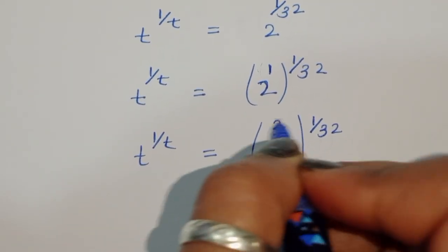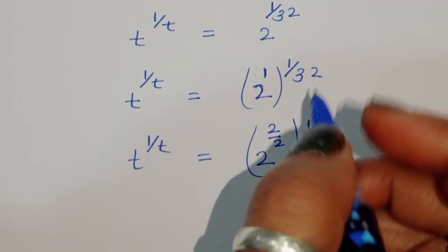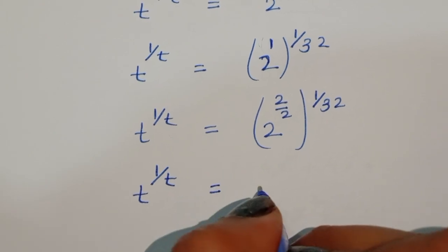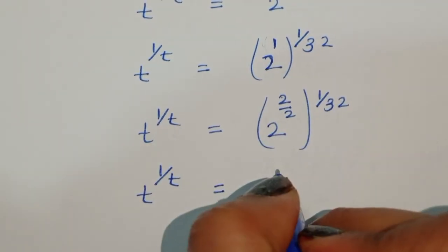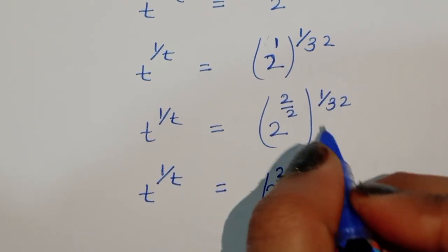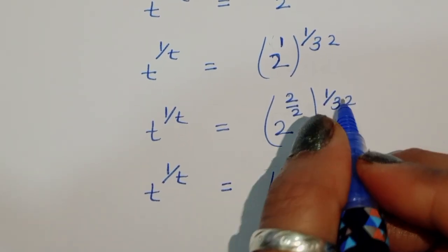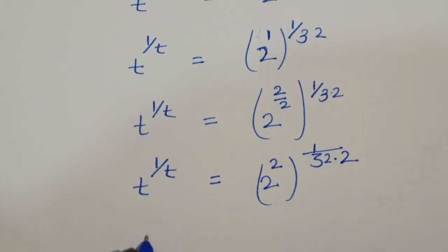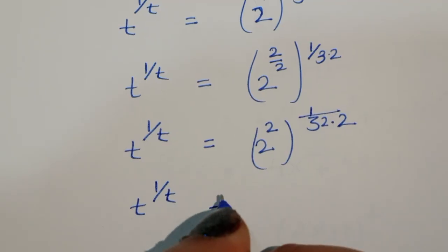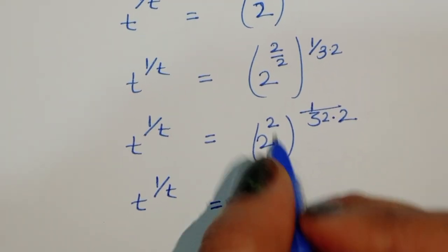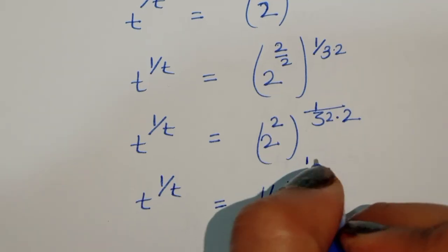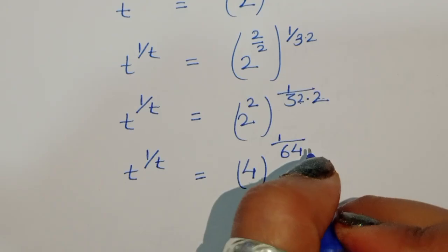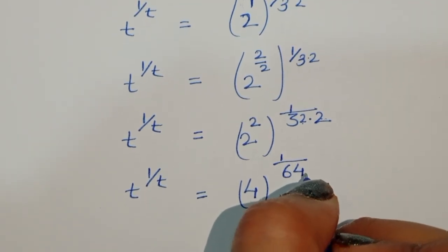Now 2 upon 2 is 1, so we are taking a 2 upon 2. We can write t power 1 upon t is equal to 2 power 2, and here 1 upon 32 times 2. So it will become t power 1 upon t is equal to 2 power 2, which we continue expanding.